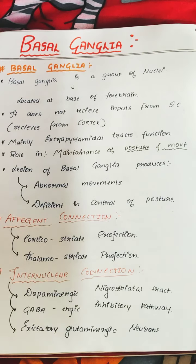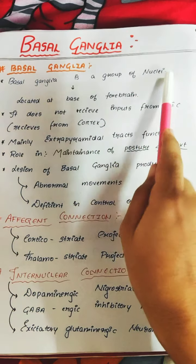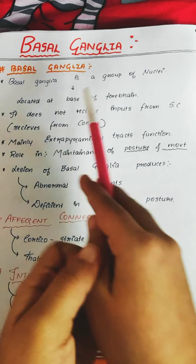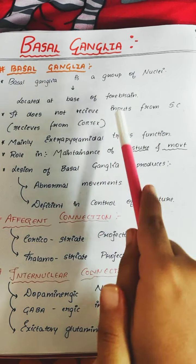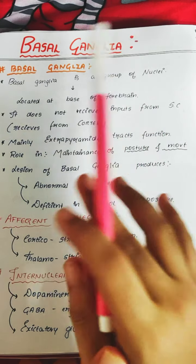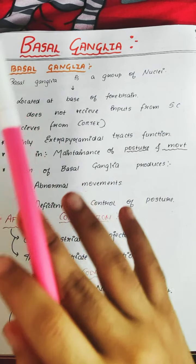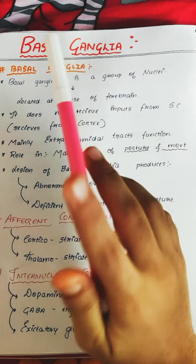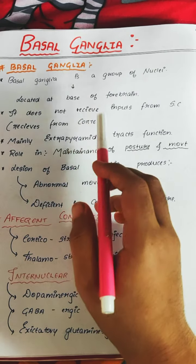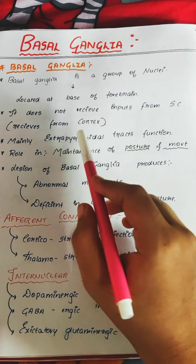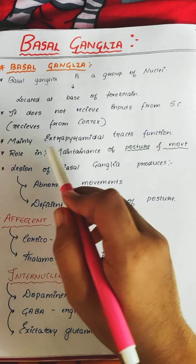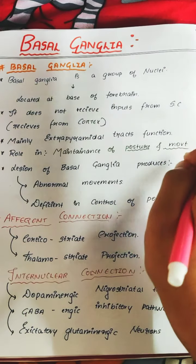The basal ganglia is a group of nuclei located at the base of the forebrain. It does not receive input from the spinal cord — unlike the ascending and descending tracts. Both the basal ganglia and the pyramidal tracts receive inputs from the cortex. They are mainly associated with extrapyramidal tract function, and their main role is to maintain posture and movement of the body.